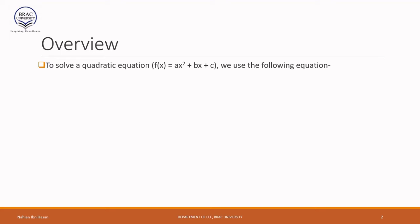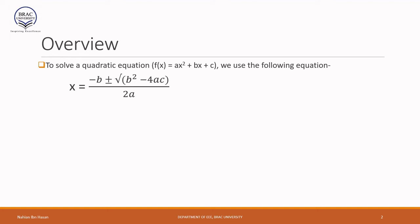We already know the familiar analytical approach for finding the roots of a quadratic equation. In the numerator we have two different possibilities: minus b plus or minus the square root of b² minus 4ac. That means there are two possible roots, because it's a quadratic equation — a polynomial of order 2 — so it should have two roots.